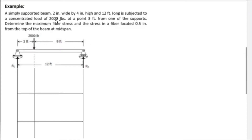Example: a simply supported beam 2 inches wide by 4 inches high and 12 feet long is subjected to a concentrated load of 2,000 pounds at a point 3 feet from one of the supports. Determine the maximum fiber stress and the stress in a fiber located 0.5 inch from the top of the beam at mid-span.